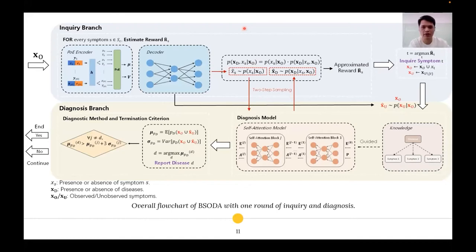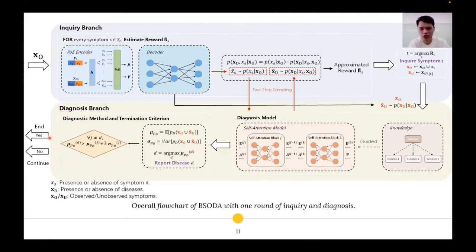For a more precise estimation, we developed a two-step sampling strategy. We first sample X_S from the VAE, then sample X_D from the diagnosis model, which approximates the joint posterior by taking advantage of the predictive distributions from the diagnosis model. For the diagnosis branch, BESOLDA returns predictions by a knowledge-guided self-attention model. In particular, BESOLDA samples unobserved features X_U from the generative model to model the uncertainty caused by partial observations. With imputed unobserved features hat X_U, we calculate the expectations and variance of the predictive distributions and design a termination criterion. BESOLDA would stop inquiring and report the chosen disease if the probability of that disease is so high that inquiring more symptoms would not overturn the diagnosis.